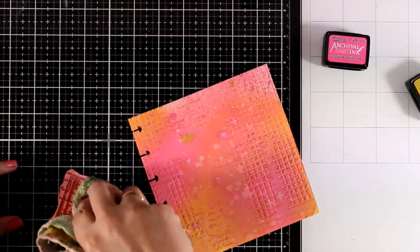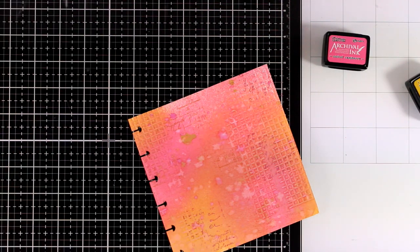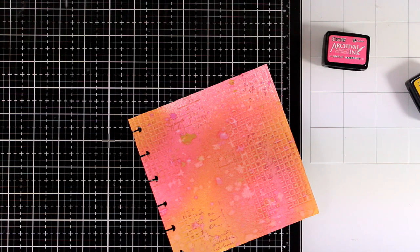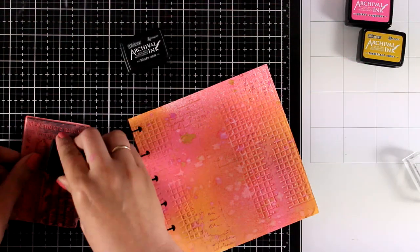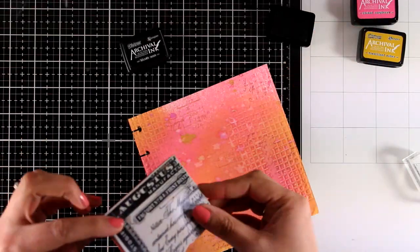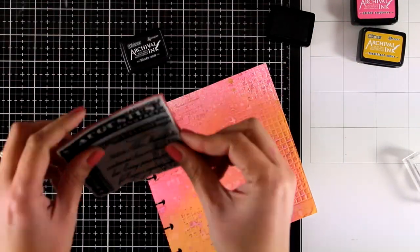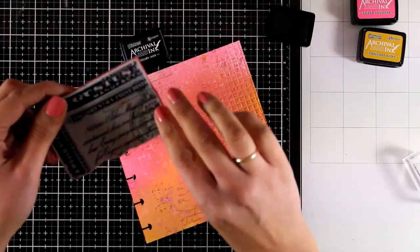Now by stamping with the same colors as the background gives me a really subtle look, but at the same time there is something interesting going on there. I don't like my backgrounds to be super busy since they will steal the thunder of my focal points.